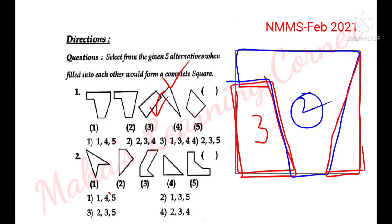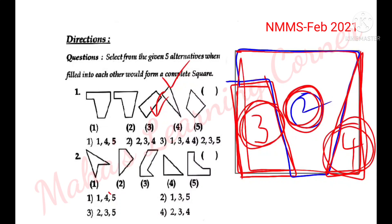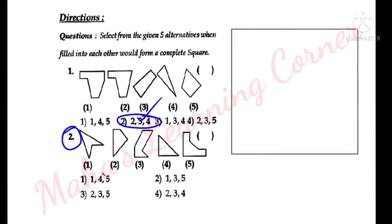The shape is the same. So this is 4. Now we have 2, 3, 4. The square is complete. So 2, 3, 4 is the same. Option 2 is the correct answer.